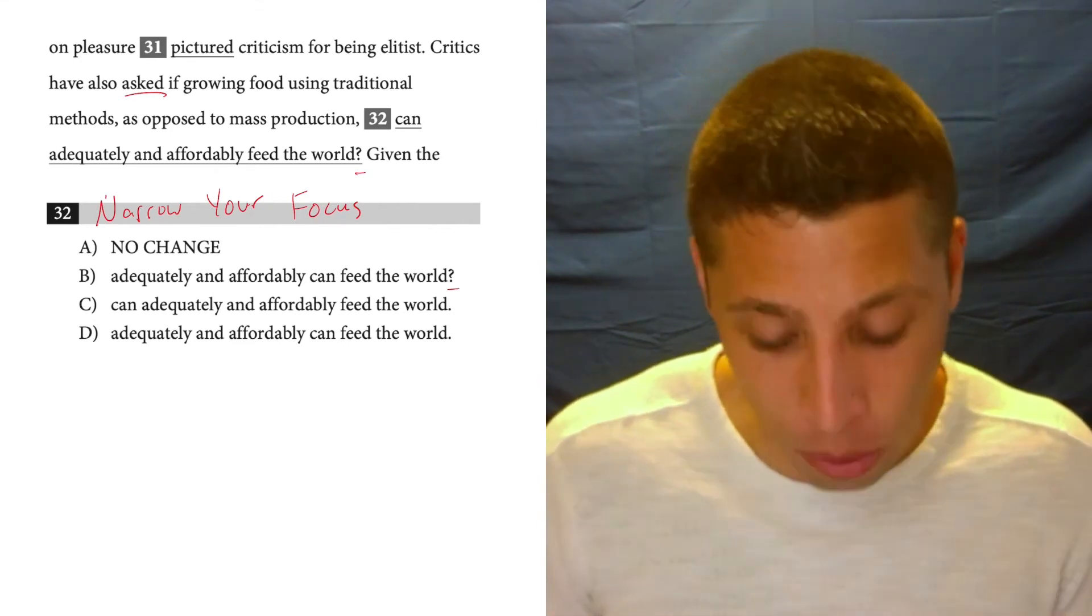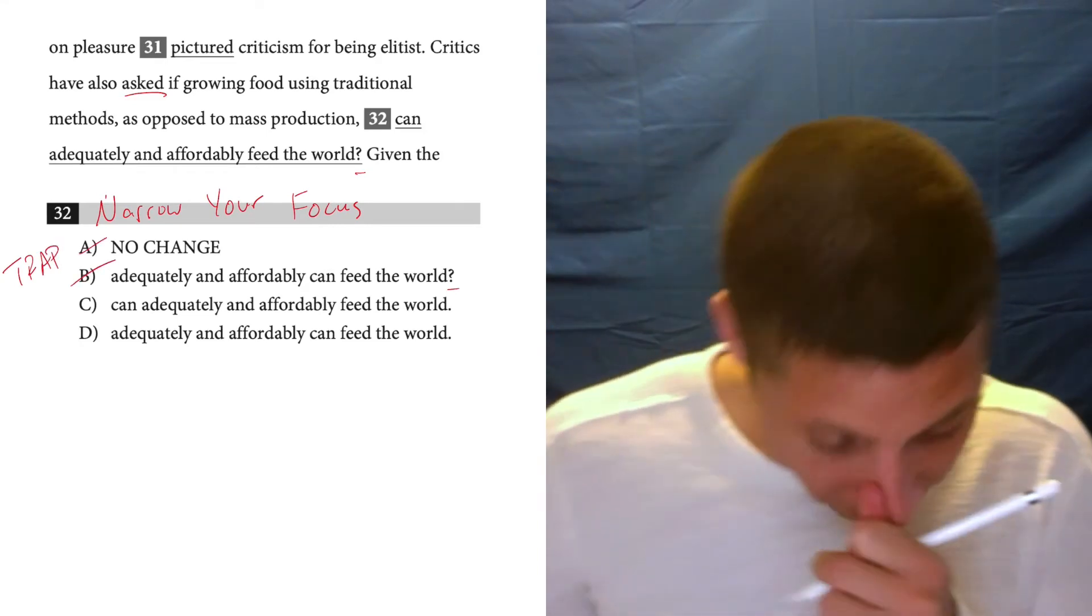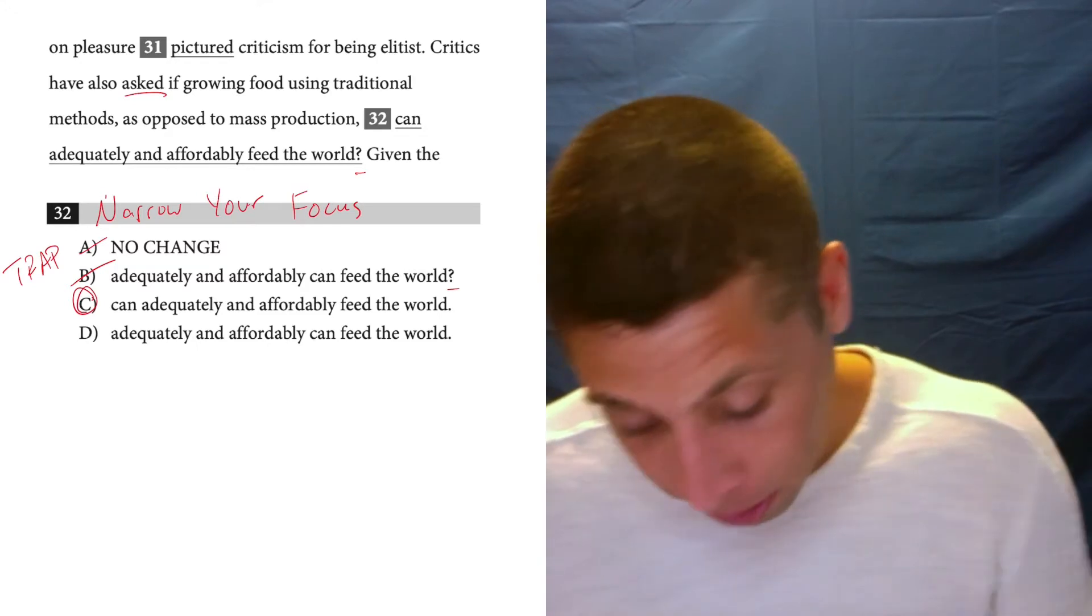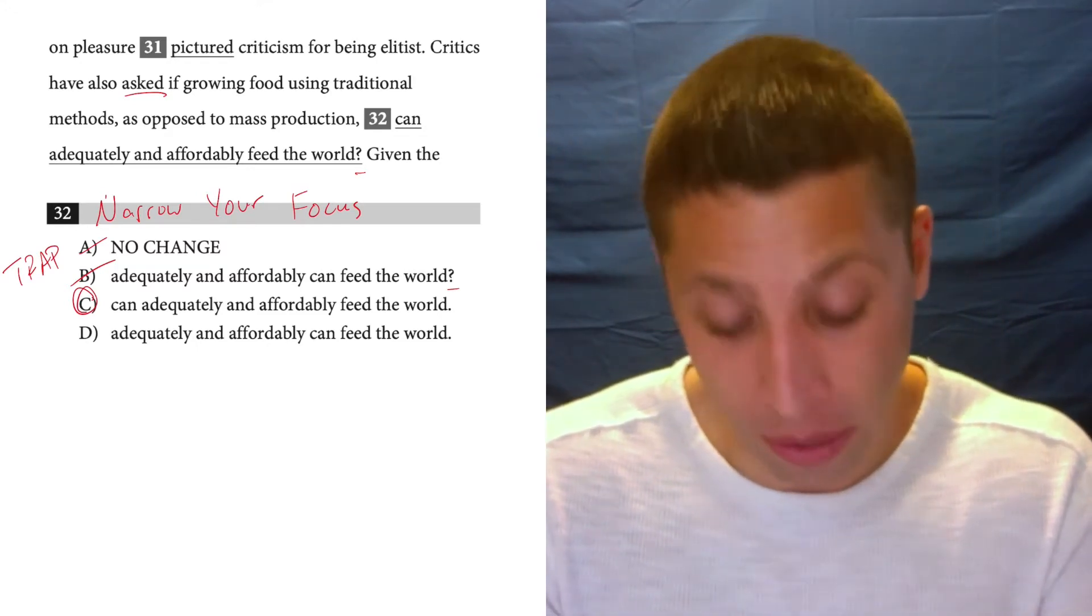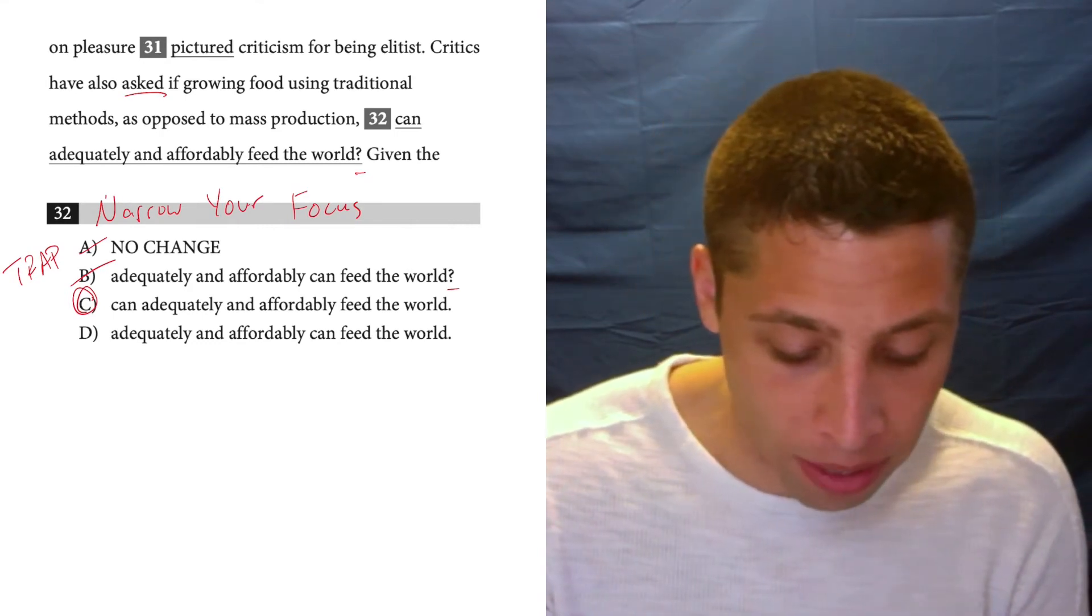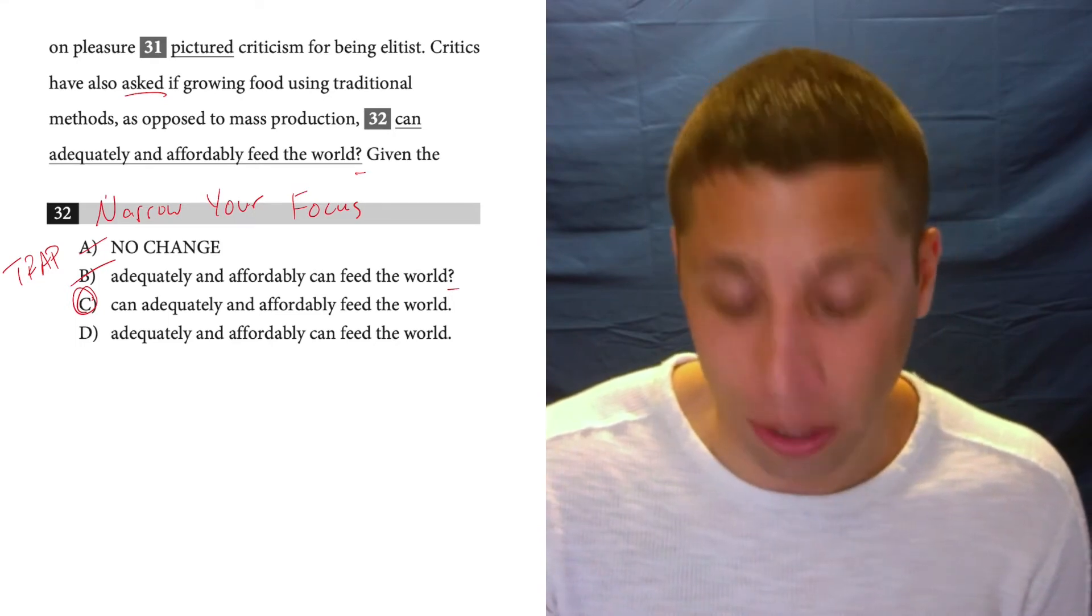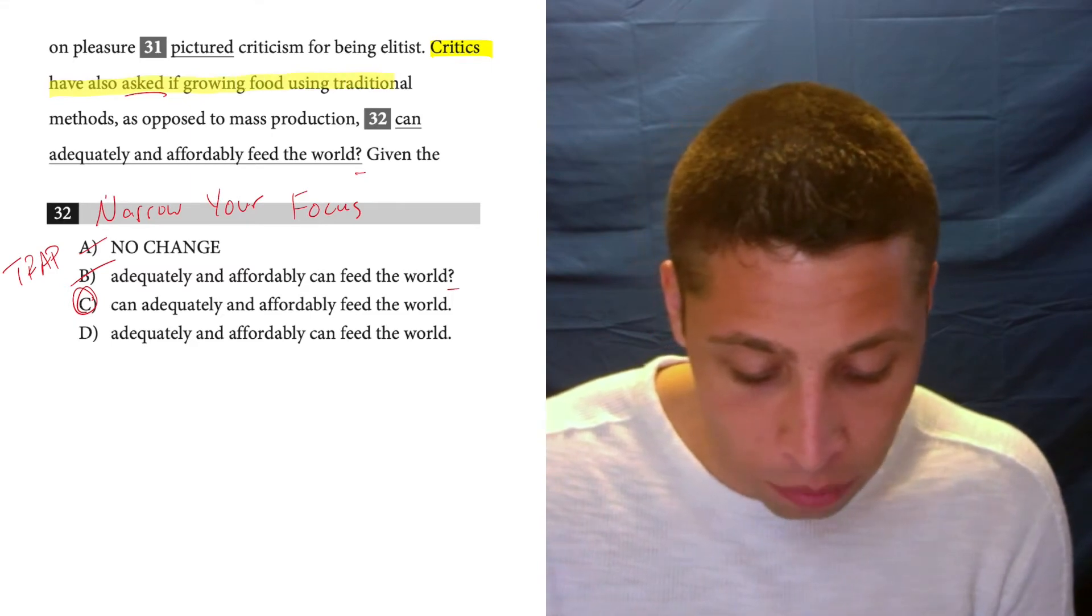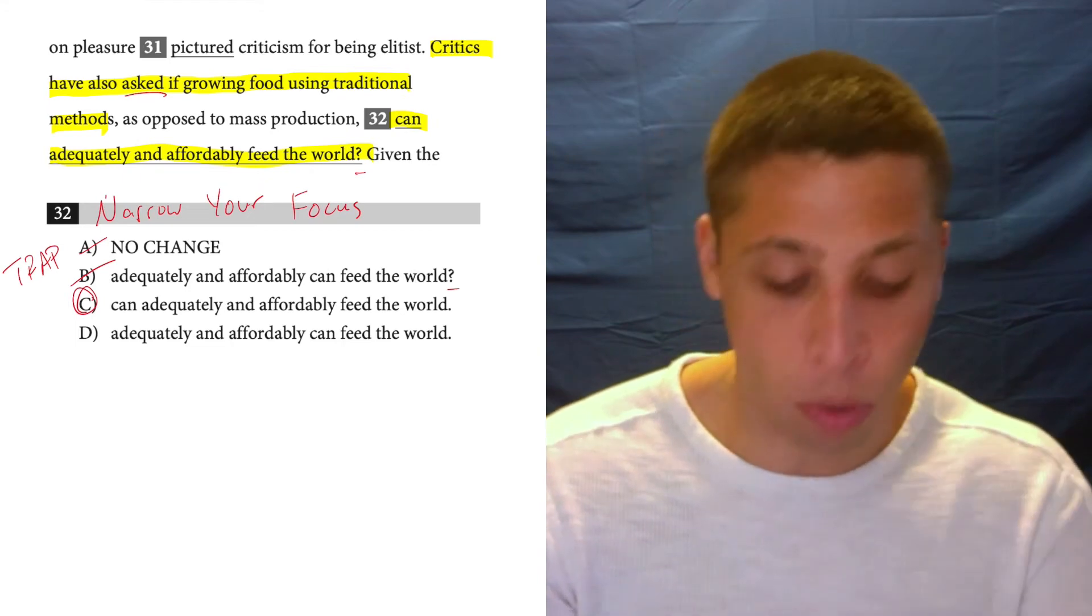We do not really go up at the end of it as if there was a question and we were trying to get a response. So it's a little bit of a trap, choices A and B. C is the right answer here. The way that we might be able to just know that is if we narrow our focus, we can omit this kind of piece in the middle. That's kind of an interruption. So if we look at the sentence and shorten it a little bit, critics have also asked if growing food using traditional methods can adequately and affordably feed the world.